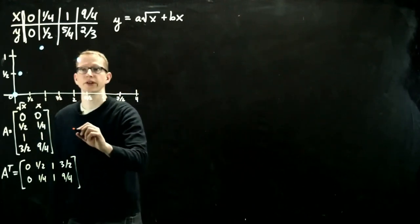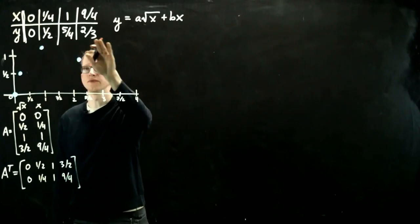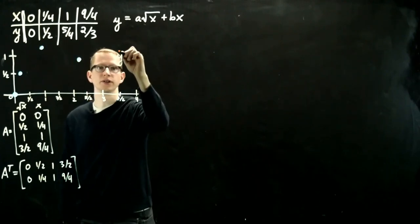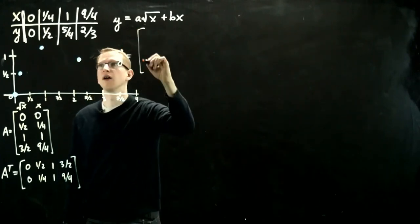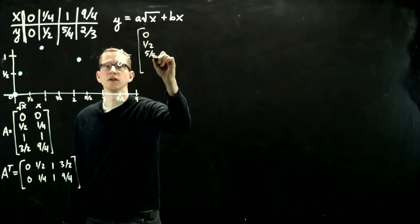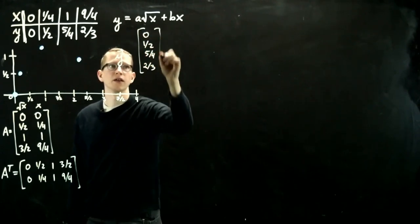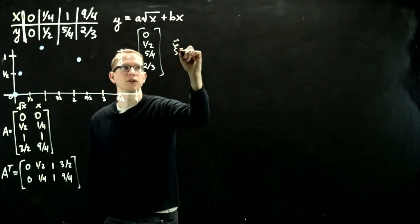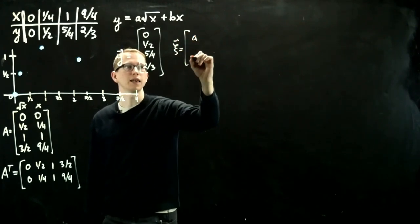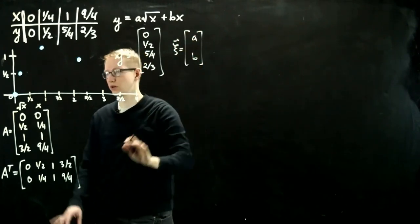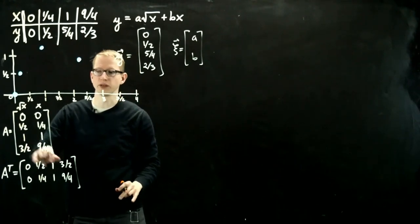And what is our vector y? That's just these values right here, so I'll even write that over here. And our C is our vector of unknowns, and this is AB. It has to be written in this order, based on the way that we wrote our matrix A.